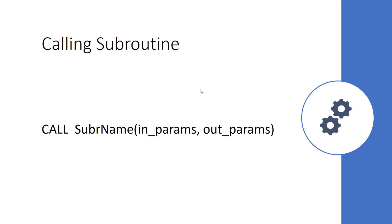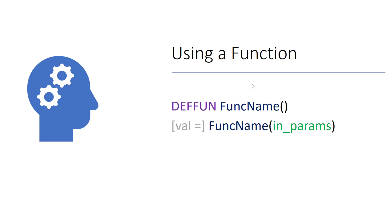How do we call a function? Before invoking a function, we need to declare it. You declare a function using the keyword define, followed by the name of the function and parentheses. To call a function, you simply write the name of the function and in parentheses you put the inward parameters. You can assign the return value to a variable.